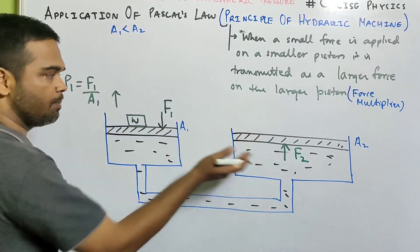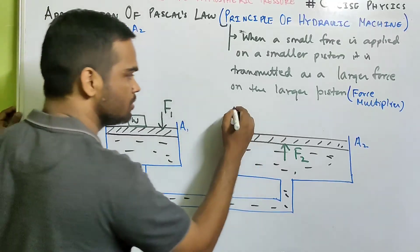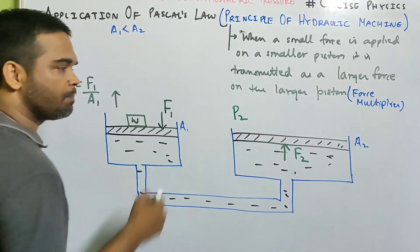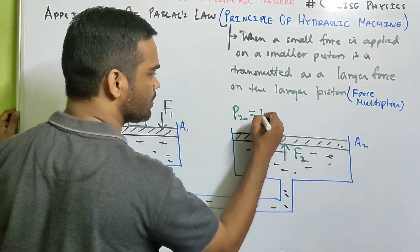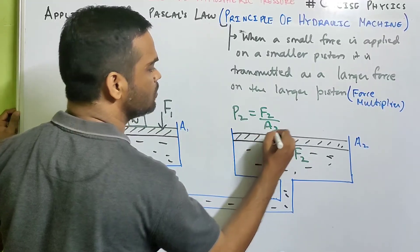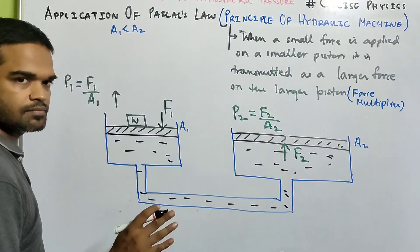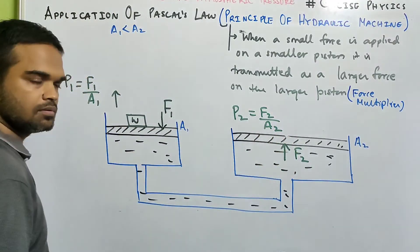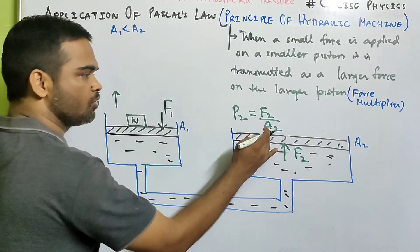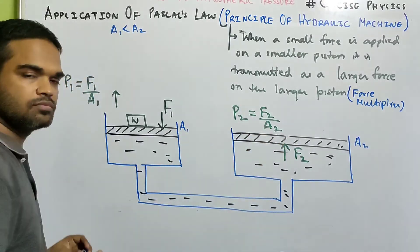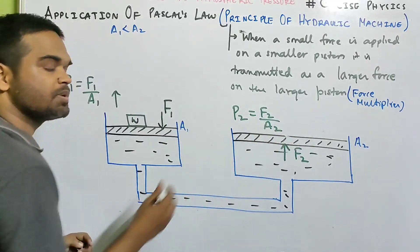Am I clear? Now this pressure is transmitted equally at this point, at this cylindrical body. So there will be an upward force f which will push this piston up due to the pressure p2. So over here p2 will be f2 by a2. Pressure will be transmitted from here to here and p2 will be f2 by a2. Suppose there is a force f2 which acts on this piston.